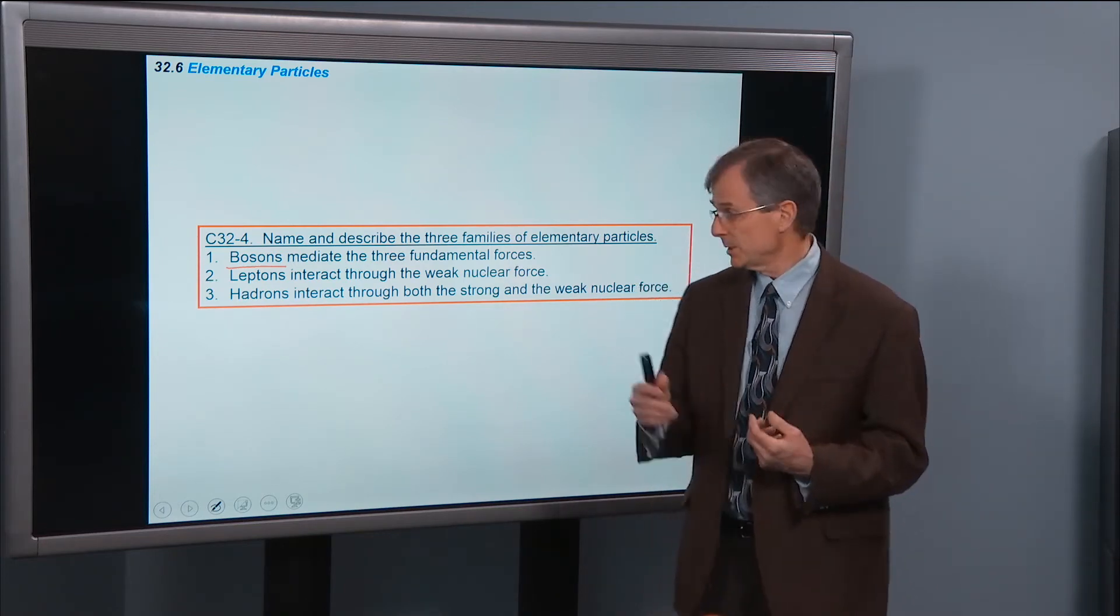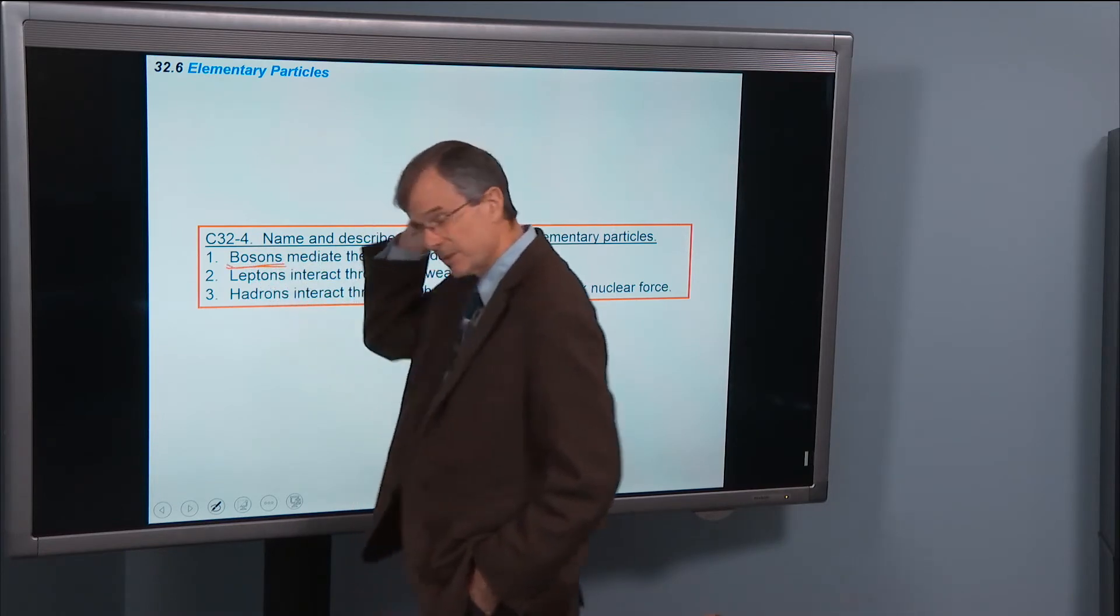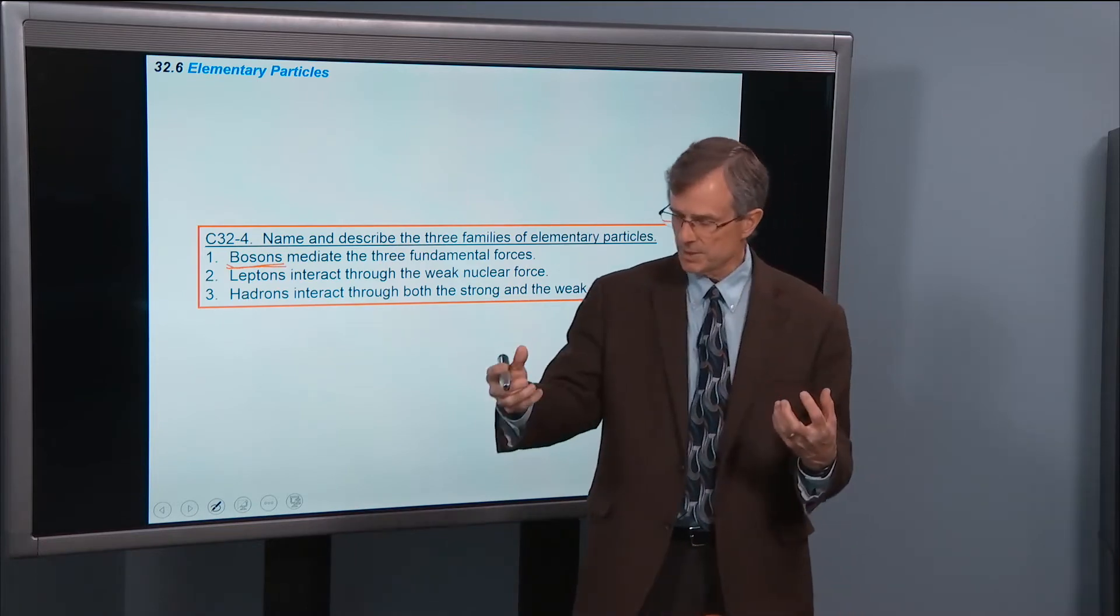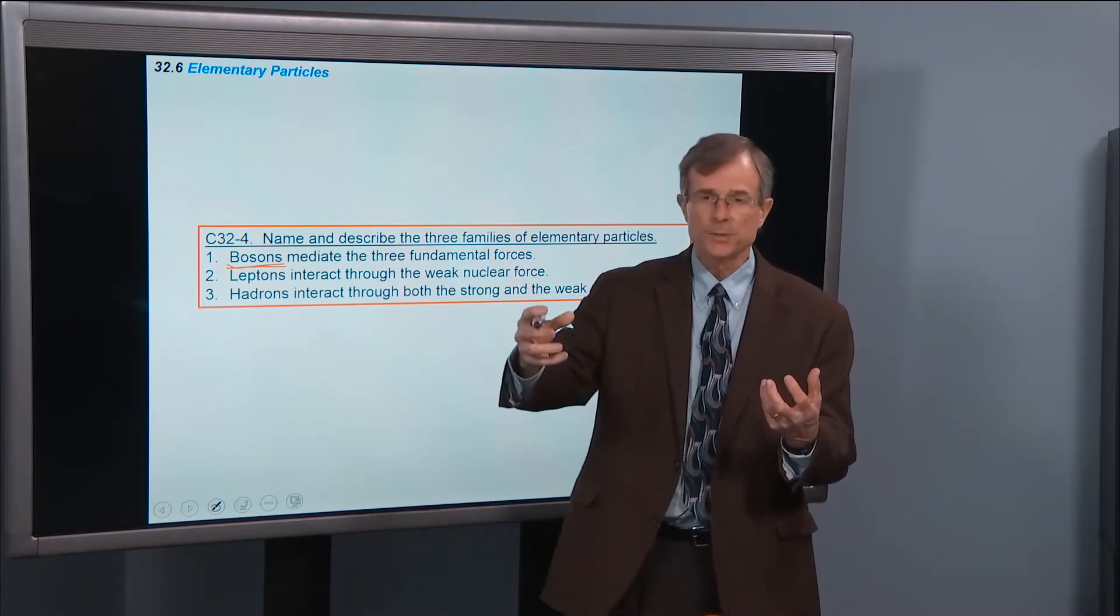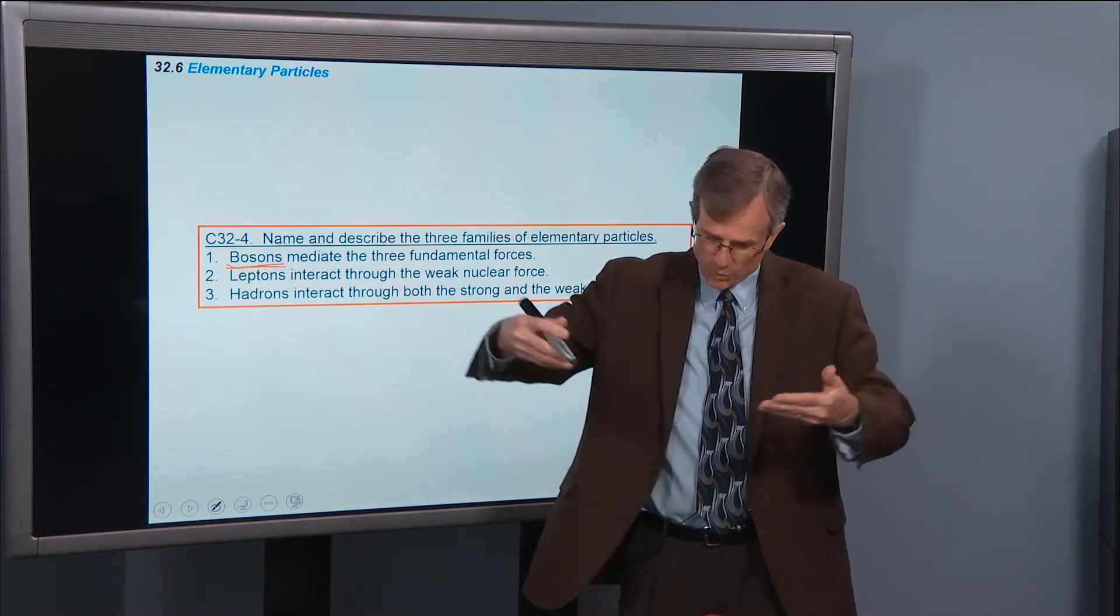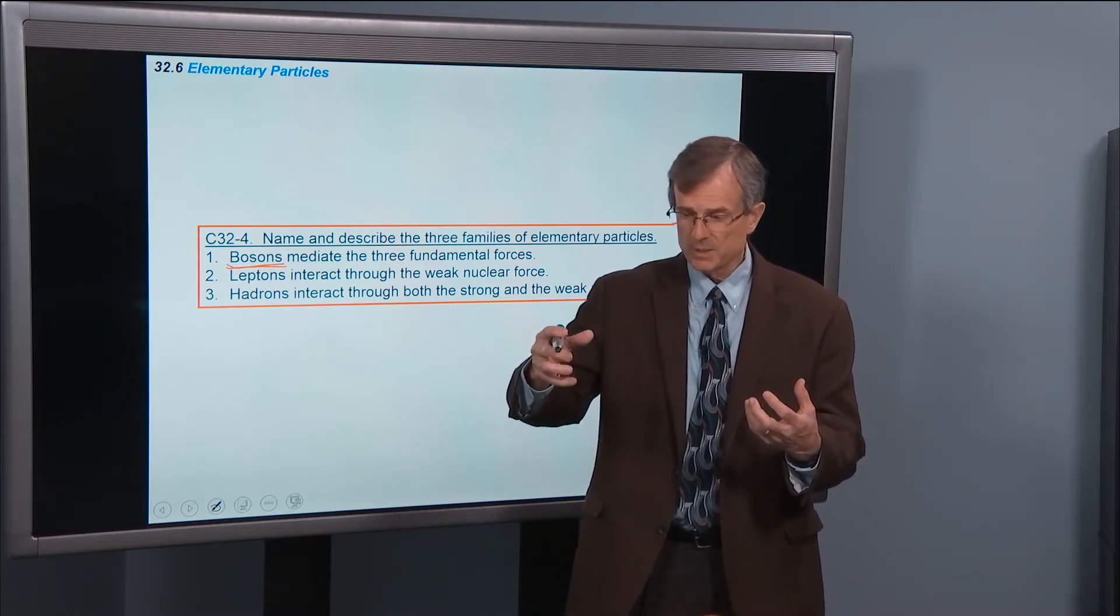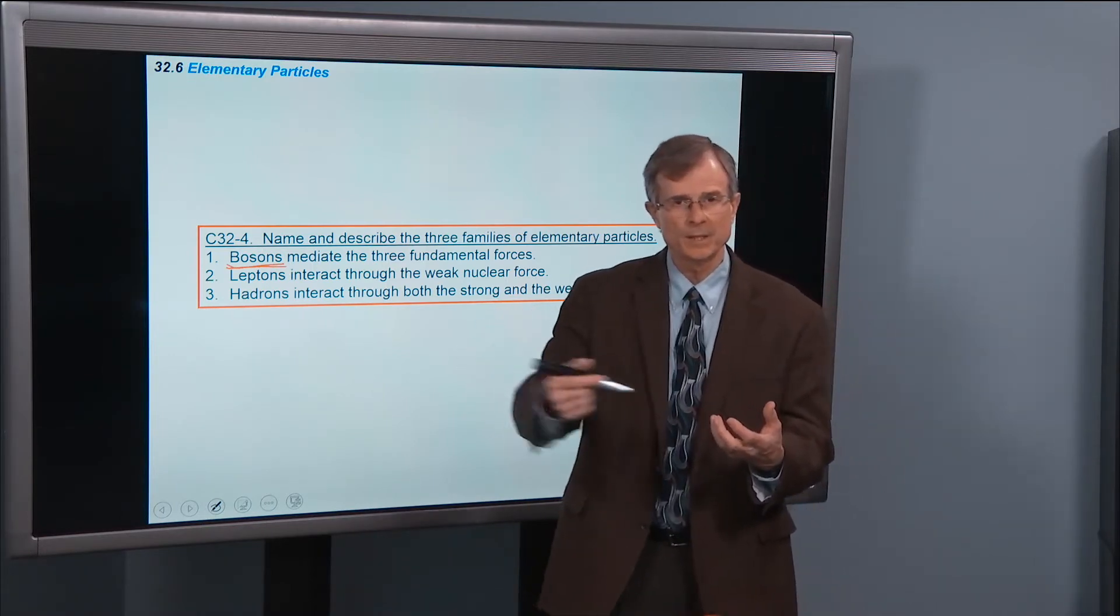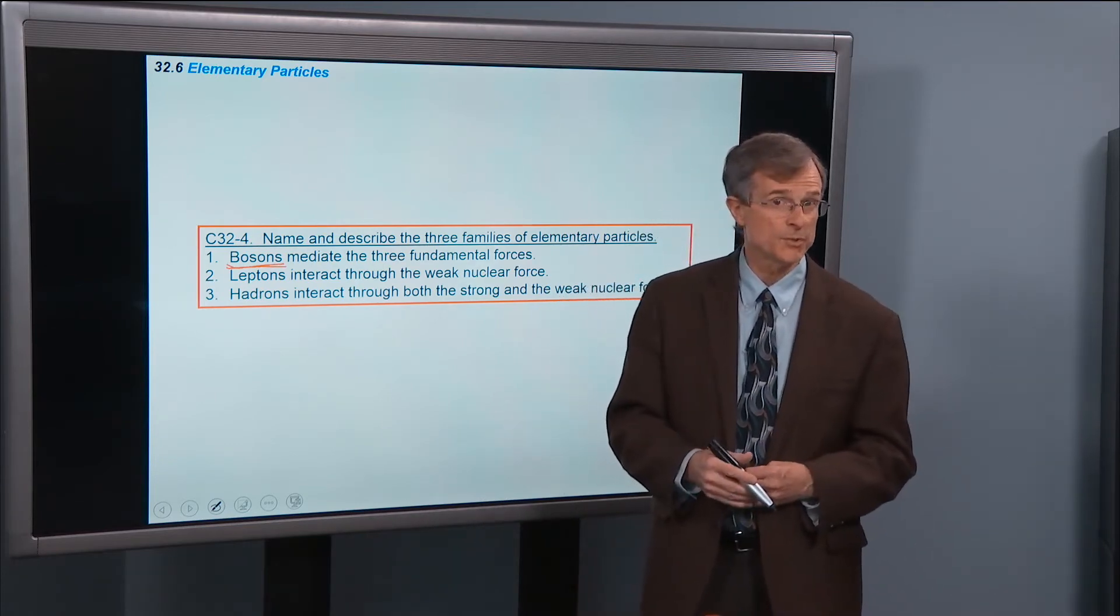The graviton is a boson, and that mediates the gravitational interaction. So if you've got the Earth and the Sun, how does the Sun know that the Earth has moved? Or how does the Earth know if the Sun has moved? They know because of gravitons that are exchanged between them. Those gravitons travel at the speed of light, same as photons do.